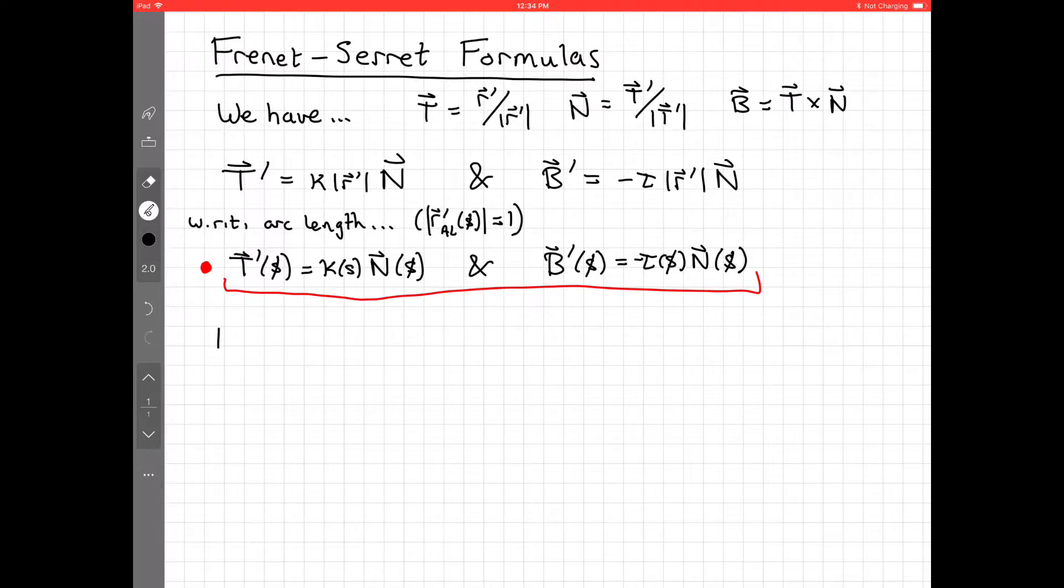So now keep in mind that we want to see what happens with the derivative of n. So n is a unit vector for all t, and this, again, by our important fact, is that it's perpendicular to its derivative. So we have that n and n' are perpendicular.